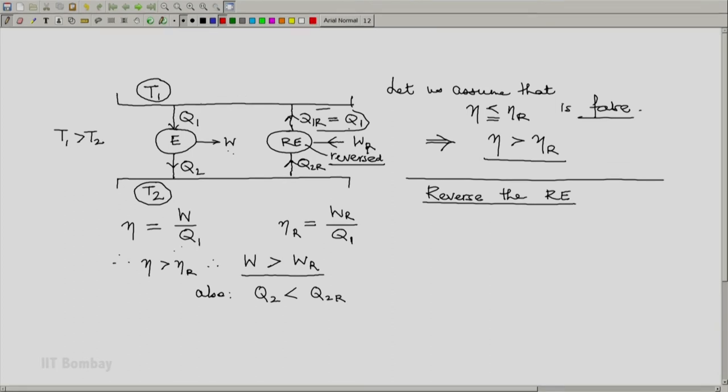Let us now notice that the reservoir at T1 absorbs Q1 from the reversible engine and rejects Q1 to the other engine E. Consequently, the reservoir at T1 does not really interact. It only anchors the temperature at T1. And now let us consider a complete system which is made up of our engine E and the reversible engine in its reversed working mode.